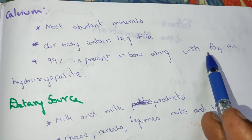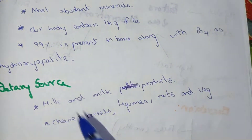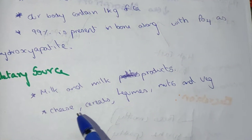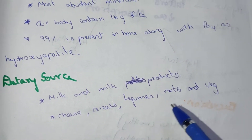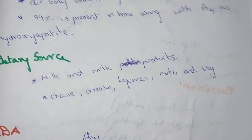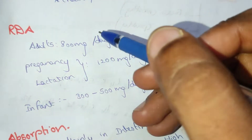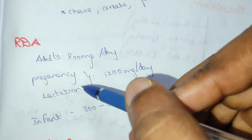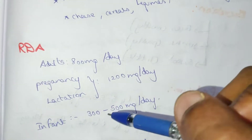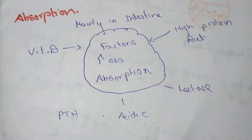The dietary sources of calcium are milk and milk products, cheese, cereals, legumes, nuts, and vegetables. The RDA for adults is 800 milligrams per day; during pregnancy and lactation it is 1000 milligrams per day; and for infants it is 300 to 500 milligrams per day.